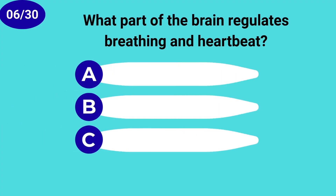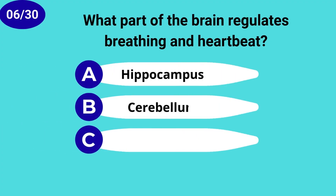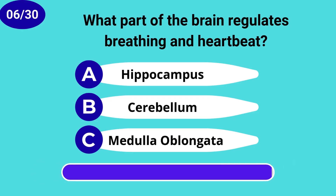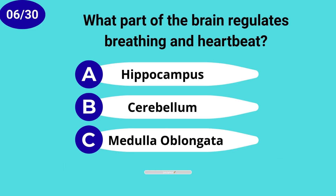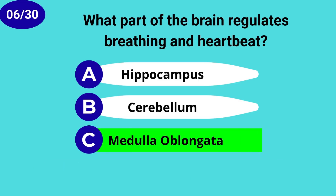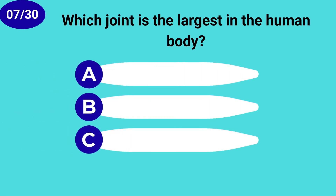What part of the brain regulates breathing and heartbeat? Medulla oblongata. Which joint is the largest in the human body?